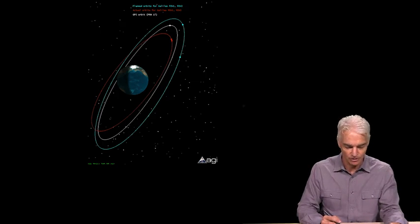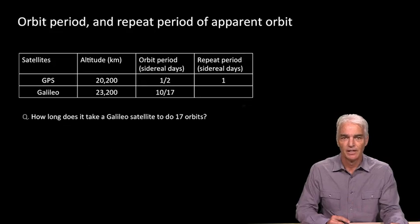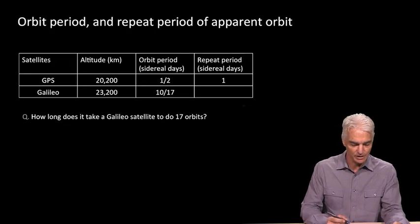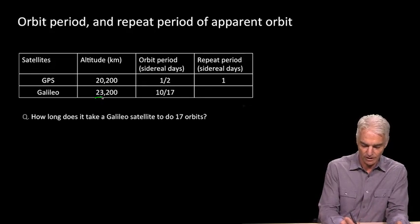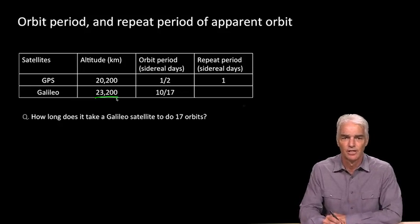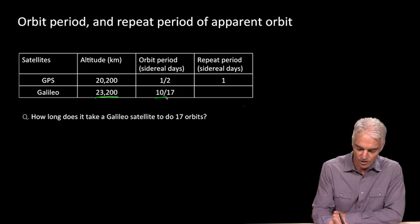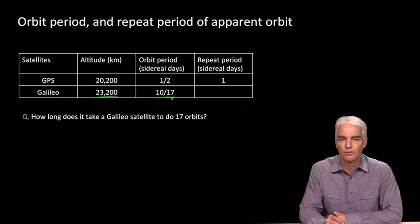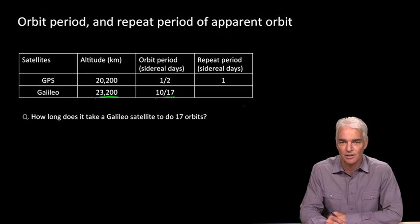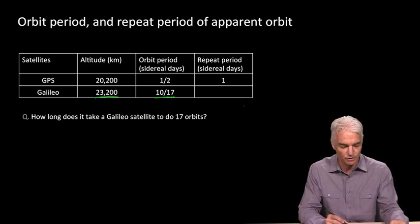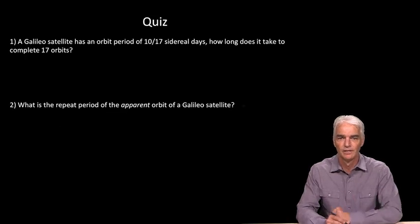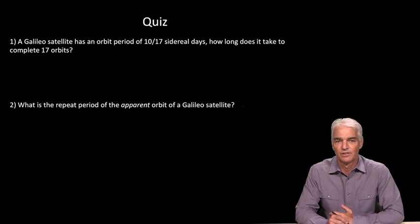If the satellites were in their correct orbit, they would be at 23,222 kilometers. As before with other systems, the system designers have chosen the orbital altitude such that the orbit period is an integer fraction, in this case 10 over 17. We've learned what to ask ourselves with that kind of orbital period: how long does it take the satellite to do 17 orbits? Once you've got that answer, you can answer the question: what is the repeat period of the apparent orbit of a Galileo satellite?